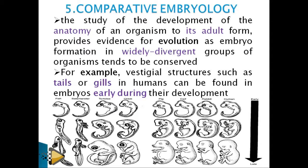One scientist stated 'ontogeny recapitulates phylogeny,' meaning history repeats itself — during our life development, we repeat our evolutionary trends. For example, at a certain stage of development you had a tail, and you also developed gills, which are structures used by aquatic organisms. This is because at one point in evolution, our ancestors lived in water.